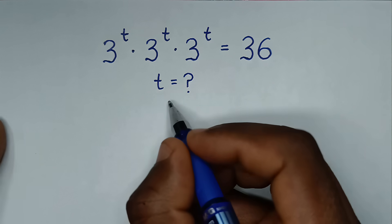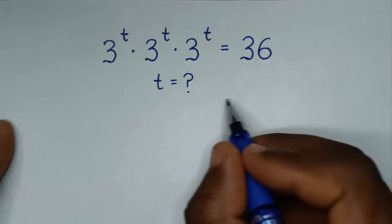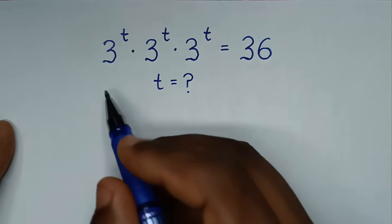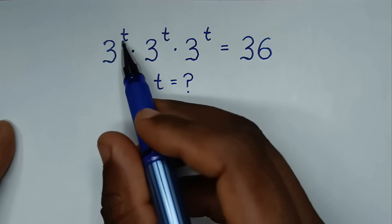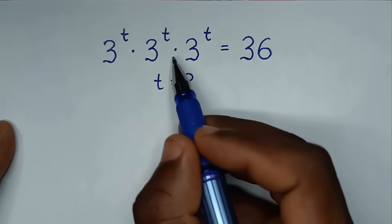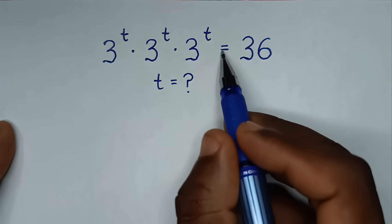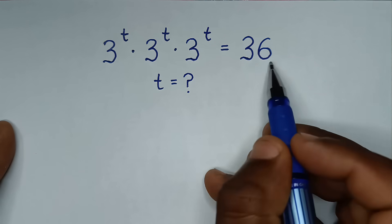Hello, you are welcome to solve this math problem, which is the cube root of t times the cube root of t times the cube root of t is equal to 36.